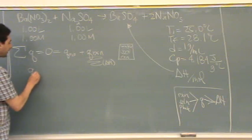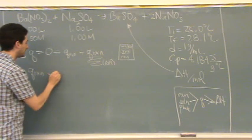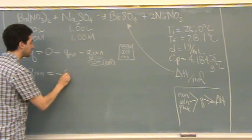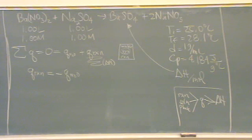So you have Q of reaction. Just solve. Equals zero. Minus. Equals minus Q of water. Is that okay?